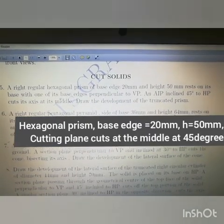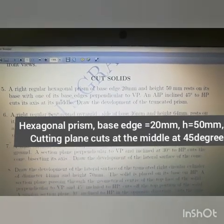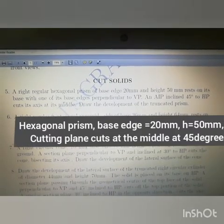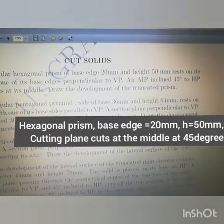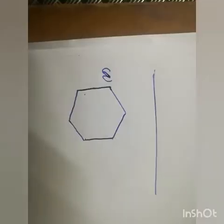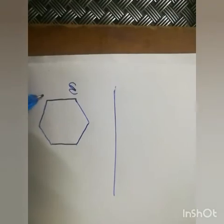An auxiliary inclined plane inclined 45 degrees to HP cuts its axis at the middle. Draw the development of the truncated prism. So first you have to draw the top view.